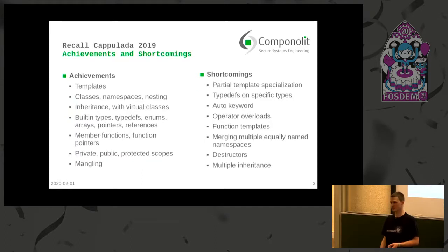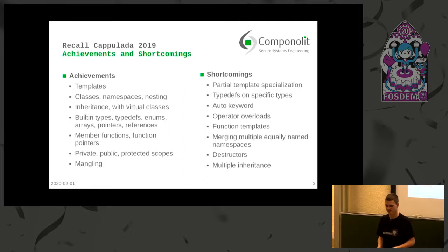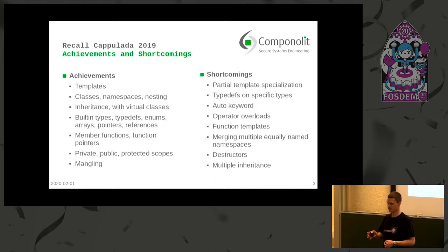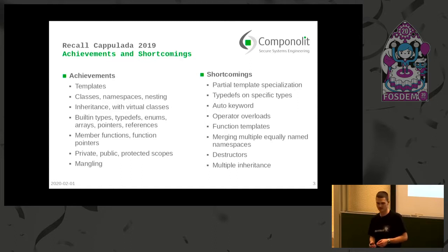So how far did we get? Well, we got working template support to some extent — I showed a demo last year. We were able to bind simple things like classes, namespaces, functions, pointers, function pointers, and visibility like public, protected, and private. And at some point we also arrived at our own — probably not complete — C++ name mangling implementation.